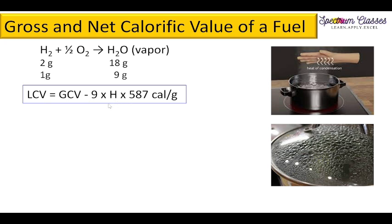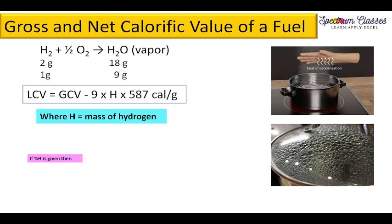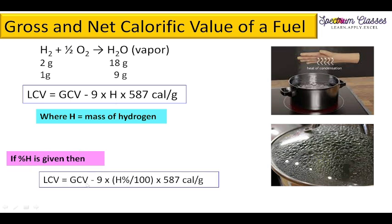If the percentage of hydrogen is given instead of mass fraction, the formula becomes: LCV = GCV − 9 × (% hydrogen / 100) × 587 calories per gram (or kilocalories per kilogram). Check your question paper for whether 587 or 580 is specified for the latent heat of steam, and use accordingly.